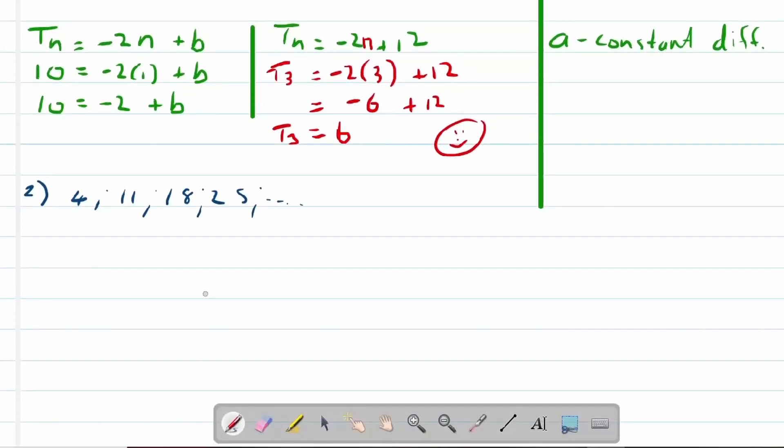Example 2. We go from 4 to 11 to 18 to 25. So let's first of all see, do we have a constant difference? From 4 to 11 it's 7. From 7 to 18 we add 7. 18 to 25 we add 7. That does mean we've got a constant difference. So that means we've got the value for a. So Tn is equal to 7 times n plus b.